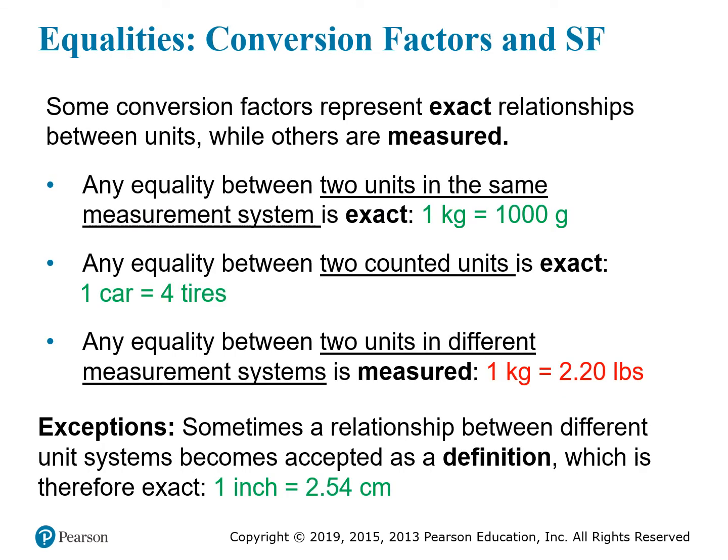Some conversion factors represent exact relationships between units, while others are measured. Any equality between two units within the same measurement system is exact, because it depends on the definitions of those units. So one kilogram is defined as 1,000 grams — that's an exact relationship. Any equality between two counted units is also exact; if you're counting car tires and cars, you know that every car has four tires — these are counted numbers, so this is an exact relationship. However, any equality between units in different measurement systems is going to be measured. For instance, we know that one kilogram is 2.20 pounds. You can consider the one kilogram to be exact, but there is uncertainty in the pound measurement, so it really has only three significant figures: 2, 2, and 0.